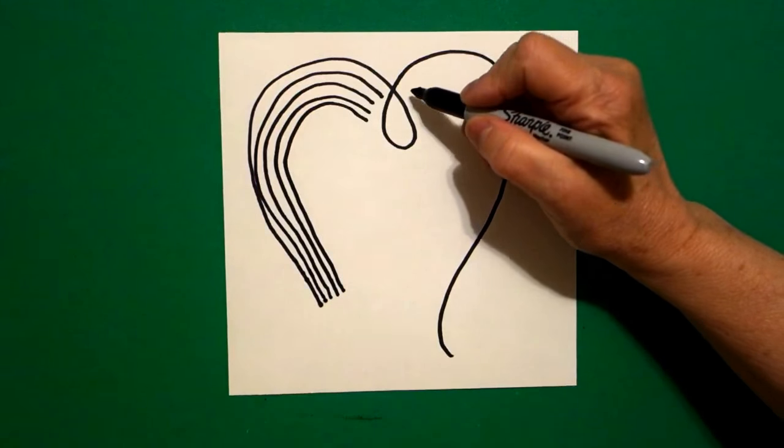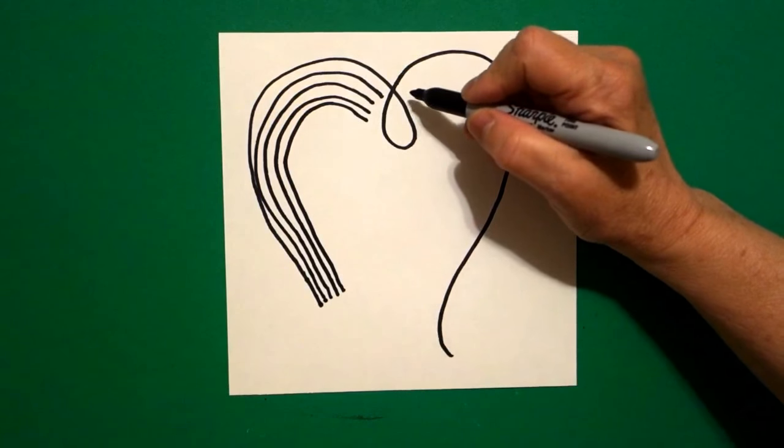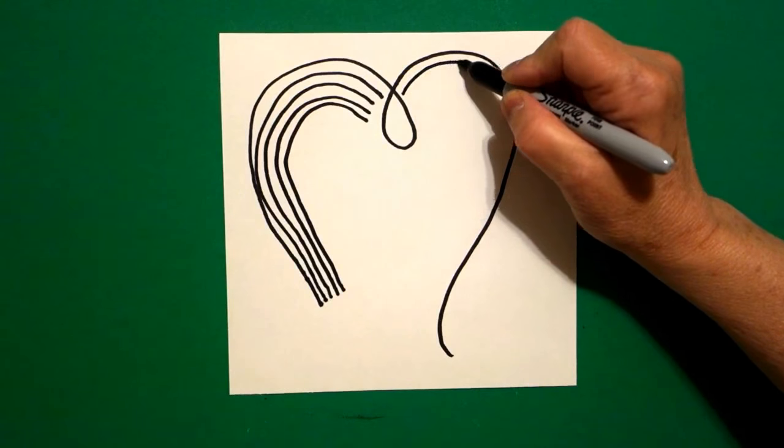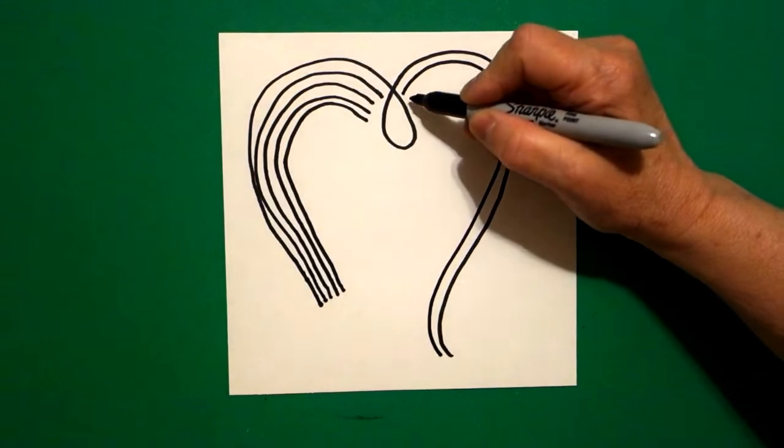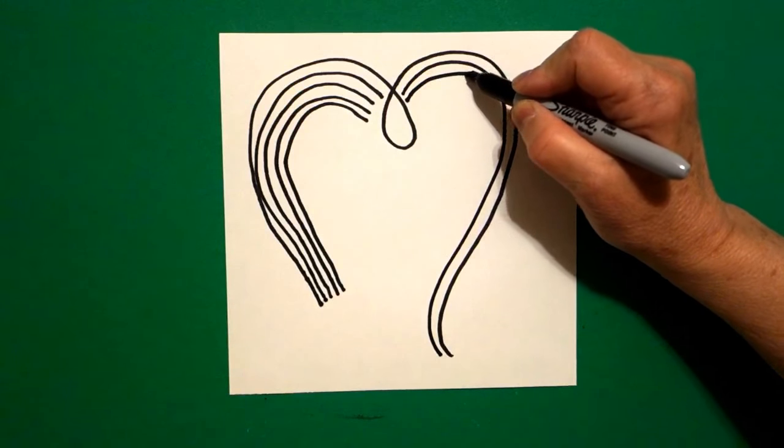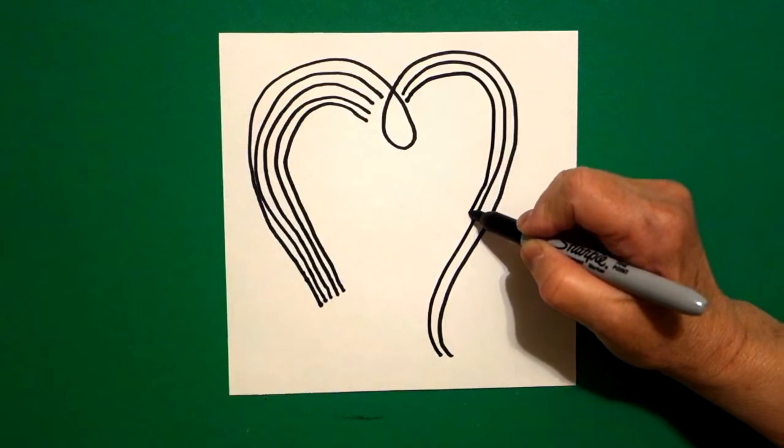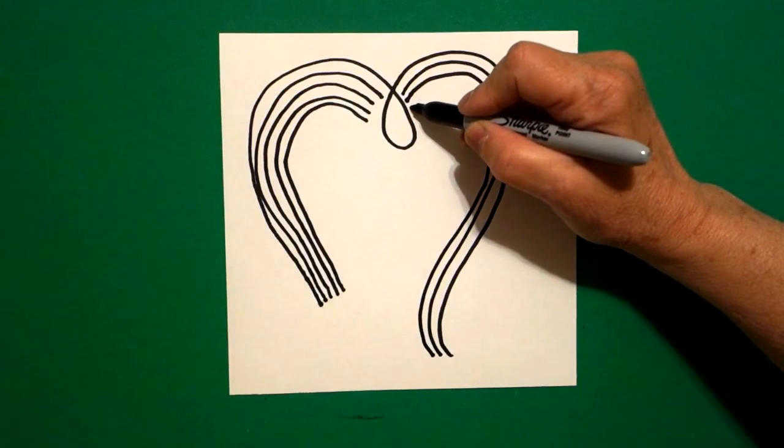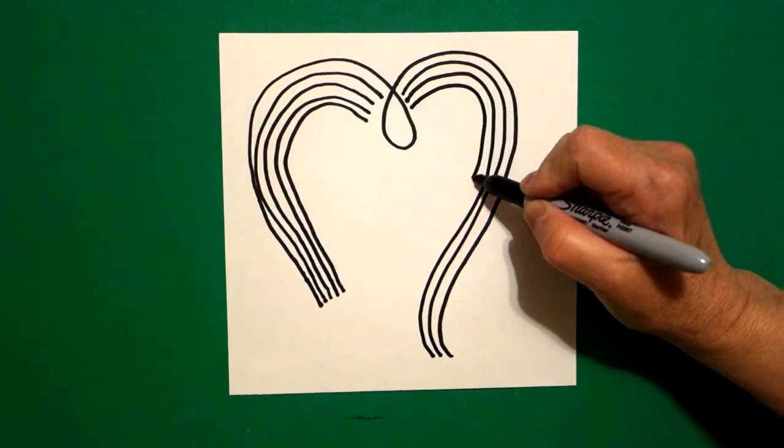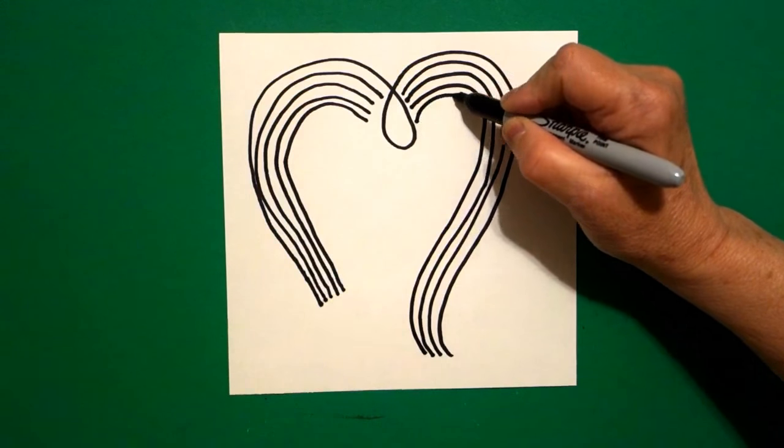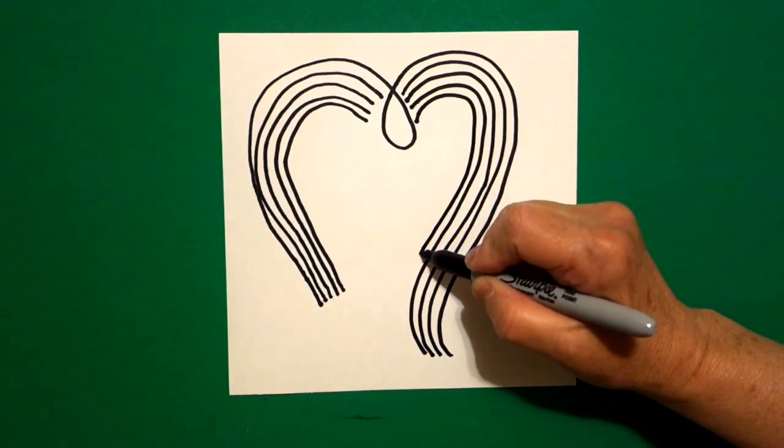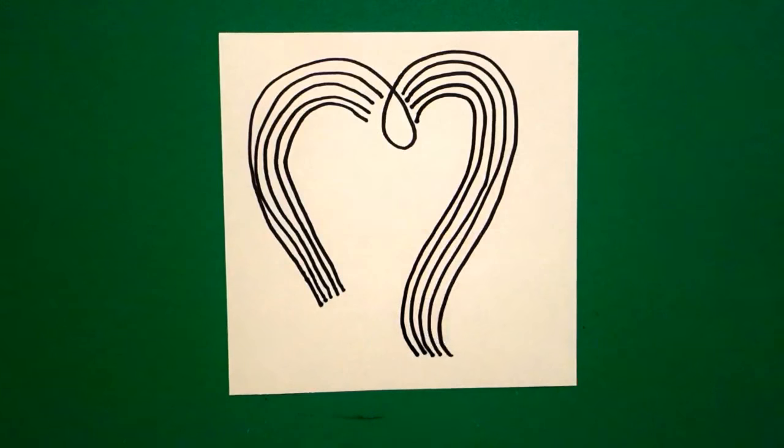Jump over and now we're going to do it again. We're mimicking our outside lines. So I draw one, two, three, four lines. There we go.